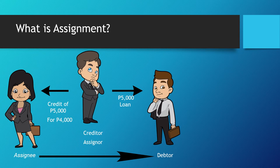In an assignment of credit, the debtor's consent is not essential for its perfection. His knowledge thereof, or lack of it, affects only the efficaciousness or inefficaciousness of any payment he might make. What the law requires in an assignment of credit is mere notice to the debtor, the purpose of which is only to inform the debtor that from the date of the assignment, payment should be made to the assignee and not to the original creditor.